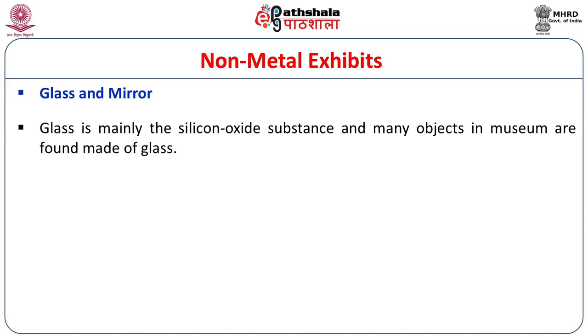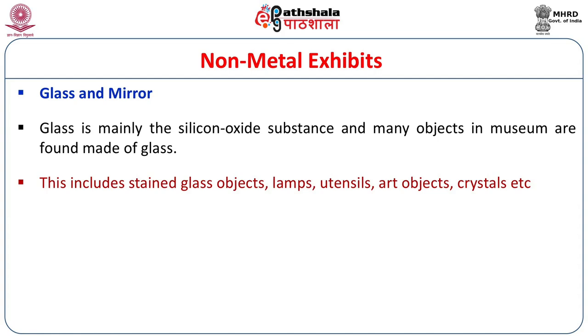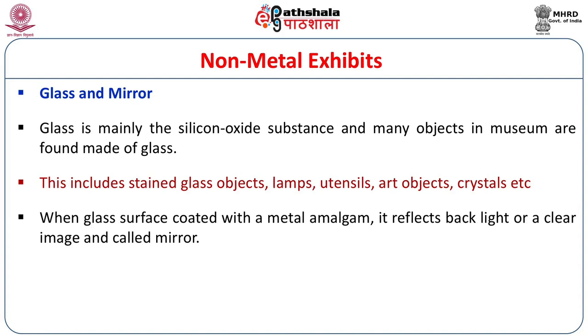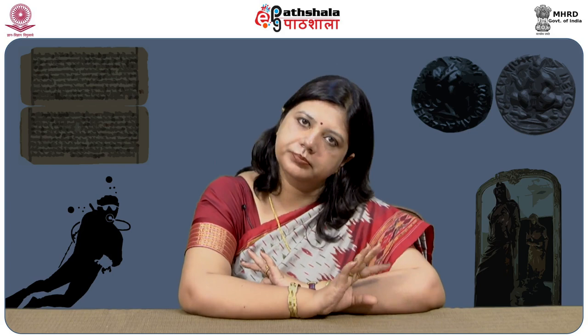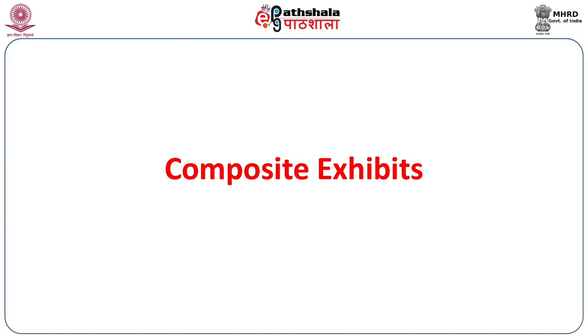There are many glass and mirror objects in museums. Glass is mainly a silicon oxide substance, and many museum objects are made of glass — including stained glass objects, lamps, utensils, art objects, crystals, etc. When a glass surface is coated with metal amalgam, it reflects back a clear image and is called a mirror. Mirrors are used in several textile and decorative art objects and ethnic jewellery. Sometimes a section of a palace made of glass or mirror can be seen as an exhibit in museum or as built heritage.